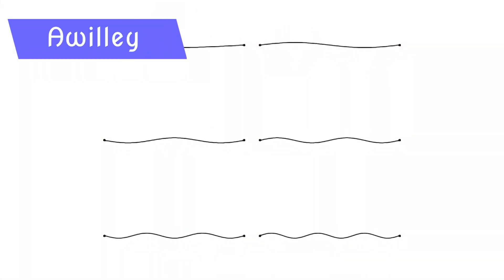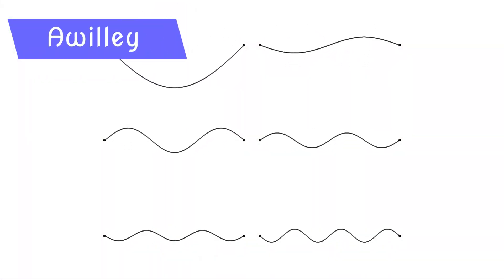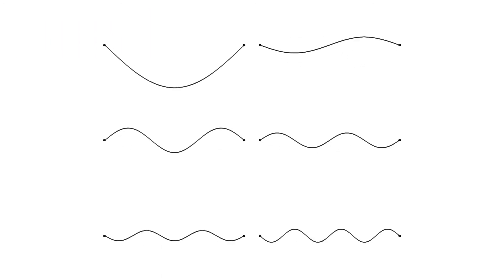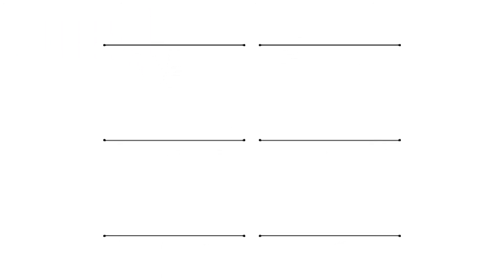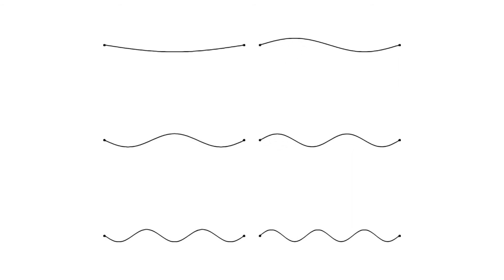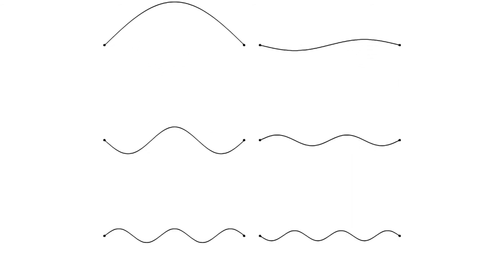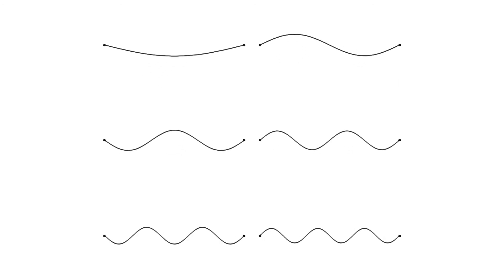String theory came about when people noticed that particles like electrons could be represented mathematically as vibrational nodes on a string. If you've ever played around with swishing a string back and forth, you'll notice that once you hit a certain frequency, the peaks and troughs of the string no longer appear to travel, but just go up and down in place. This is called a standing wave.